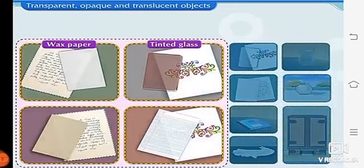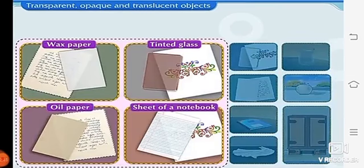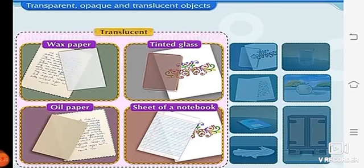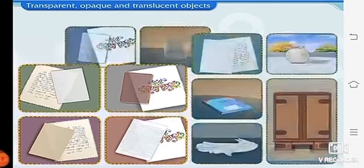Wax paper, tinted glass, oil paper, sheet of a notebook are translucent objects because we can see through it but not so clearly. So, they are called translucent objects.